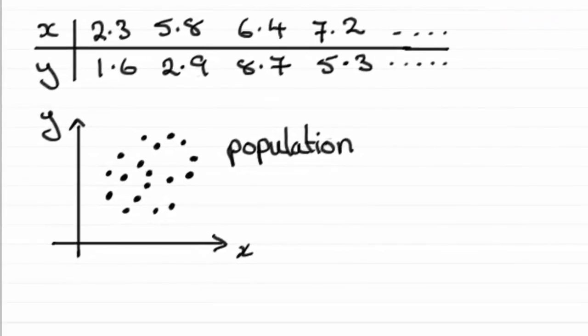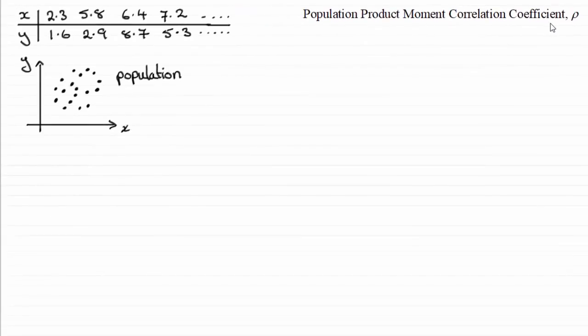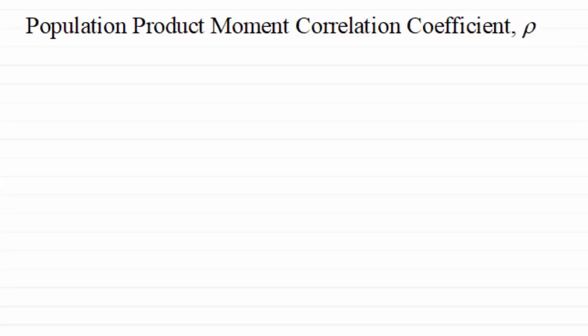Suppose we have a table or scatter diagram of bivariate data for a population of observations. We could calculate the population product moment correlation coefficient rho — I'll generally call it PMCC for short in this tutorial. However, suppose we don't have the population data at hand, and I need to calculate the likelihood of that population parameter rho being equal to zero, greater than zero, or even less than zero. How do I do it?